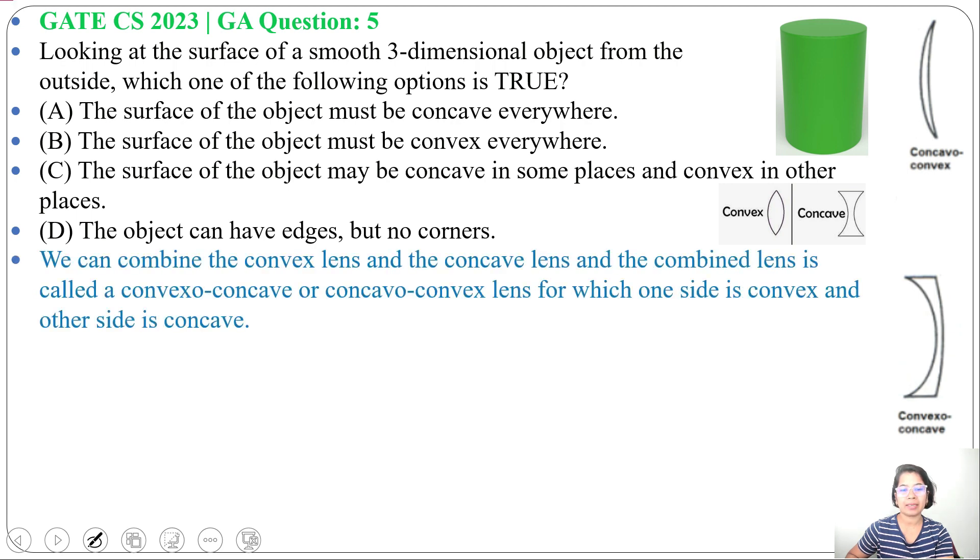You can say there may be a combination of two lenses. We can combine the convex lens and the concave lens and the combined lens is called a convex-concave or concave-convex lens, for which one side is convex and the other side is concave. The surface can be convex-concave or concave-convex.